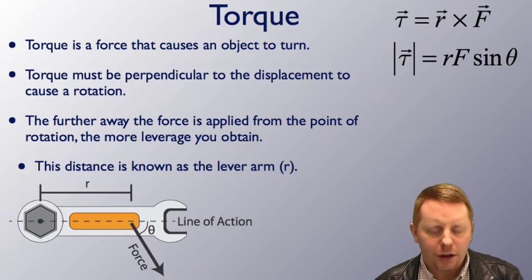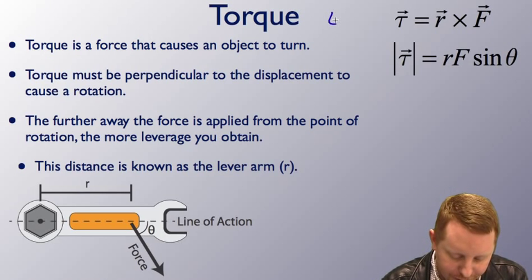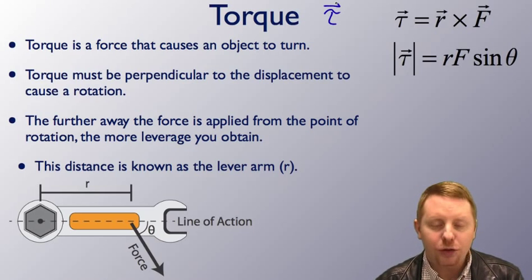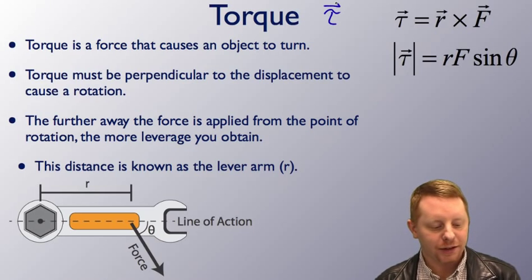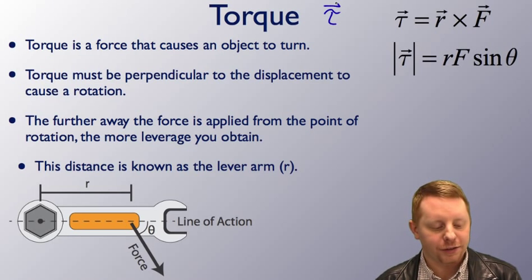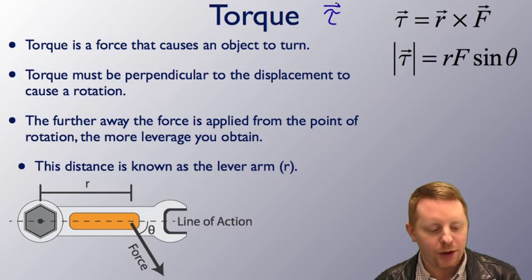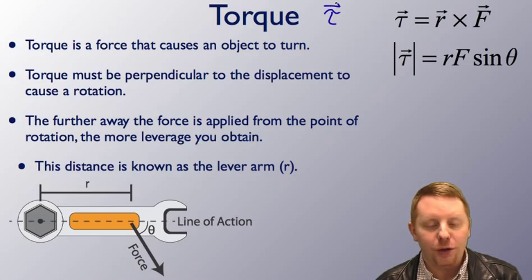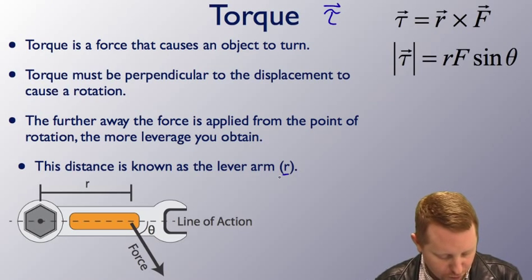So to start off, let's talk about torque, which is a vector. The Greek letter tau is used to symbolize it, and torque is a force that causes an object to turn. In order for a force to cause a torque, the force must be perpendicular to the displacement and therefore causing a rotation. Now the further away the force is applied from the point of rotation, the more leverage you obtain. This distance is known as the lever arm or R.